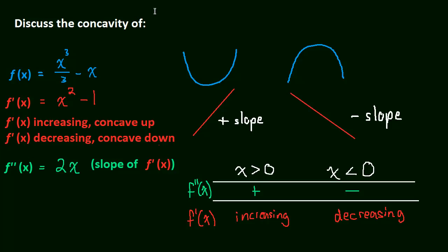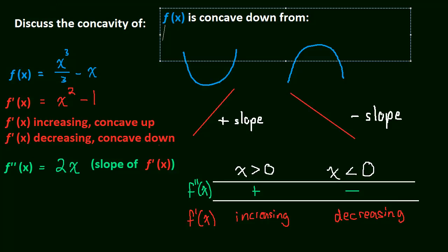So to answer the question or to discuss the concavity, all we have to say now is that the function, or let me, I guess I'll write it as f of x, the original function. So f of x is concave up, or let me write it this way, is concave down and this will be negative infinity, but I can't actually type. Actually, I'll just do it this way. Okay, and f of x is up from.